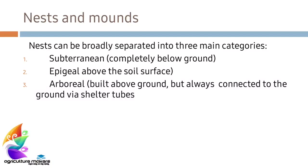Regarding nests and mounds, nests can be separated into three categories: subterranean, epigeal, and arboreal. Subterranean refers to completely below-ground nests. Epigeal refers to above-ground soil surface nests. Arboreal refers to nests built above ground but always connected to the ground via shelter tubes.